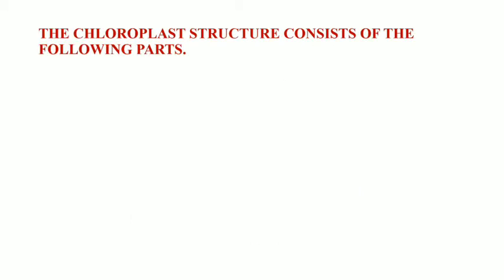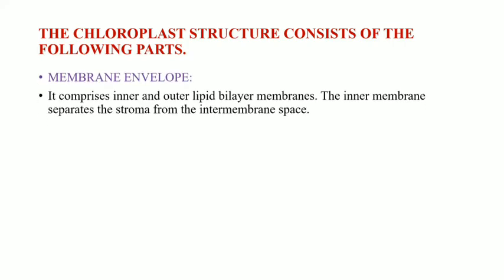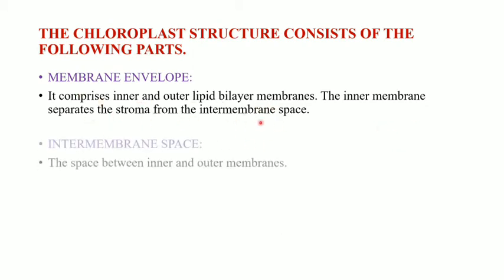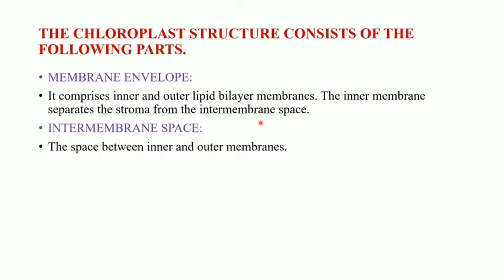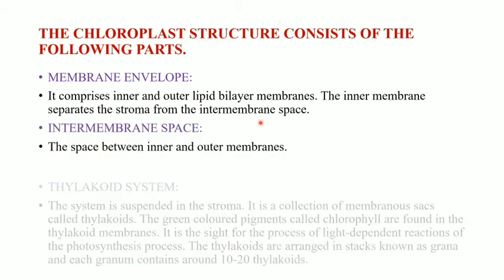The membrane envelope consists of inner and outer membranes made up of lipid bilayer membranes. The inner membrane separates the stroma from the intermembrane space — which is the space between the inner and outer membranes — and the thylakoid system is suspended in the stroma.